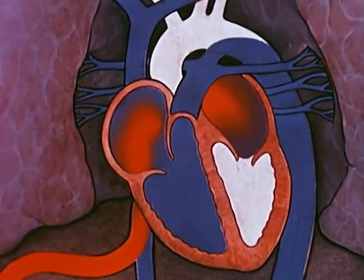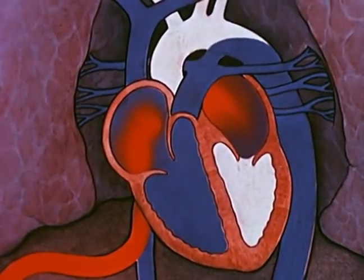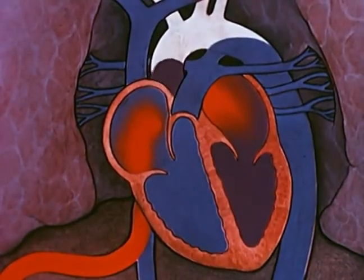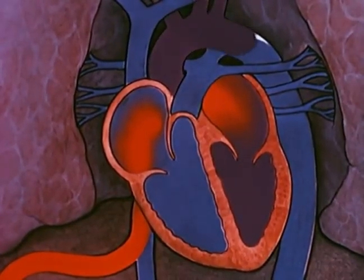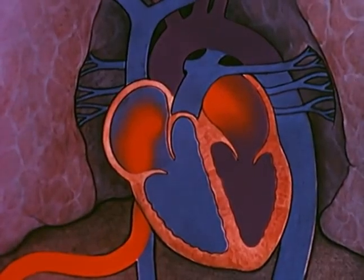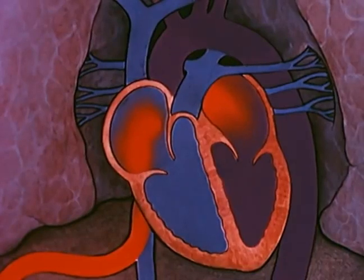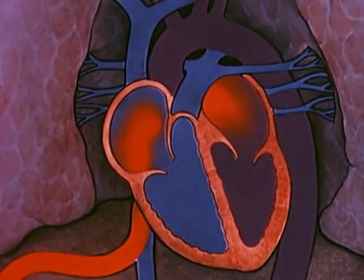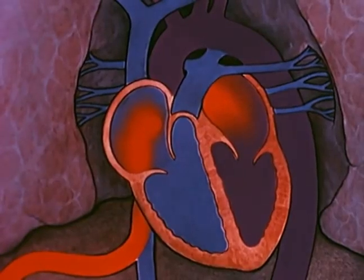This mixture of venous and oxygenated blood enters the left ventricle and is pumped into the aorta, from which the carotid arteries arise to supply the brain. Through the descending aorta, partially oxygenated blood is distributed to the lower portions of the body. This circulatory pattern persists throughout the remainder of fetal development.